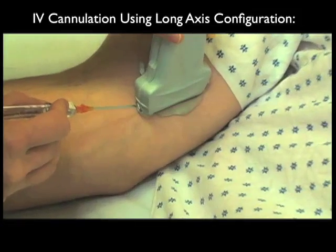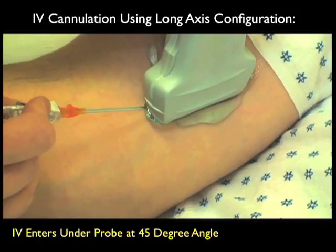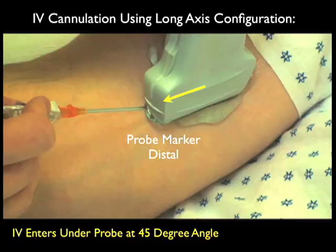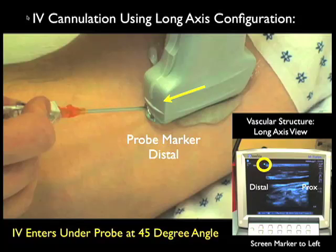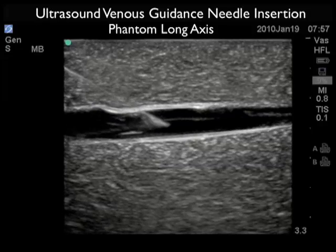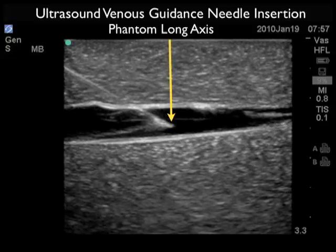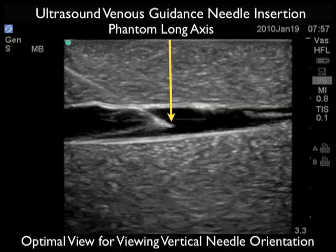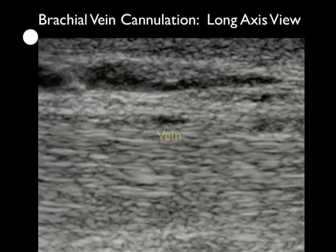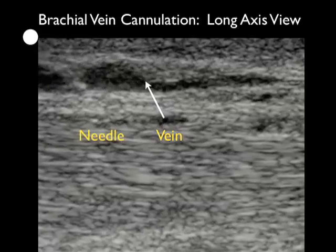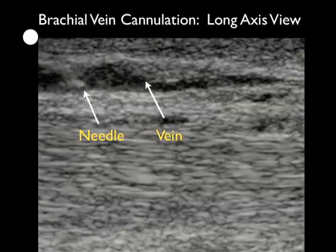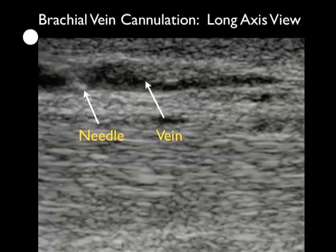We can also use the long axis configuration for cannulation of a deep arm IV. Optimally, you want to place the probe in the configuration of the vessel as it runs up and down the patient's arm. By tradition, we want the probe marker oriented distal so that the distal aspect lines up to the left of the ultrasound screen. Distal on screen will be to the left and proximal to the right. The IV then enters underneath the probe at a 45-degree angle. While the short axis gives information about side-to-side orientation, the long axis gives information about vertical needle depth. Here we see a needle coming from the left and permeating into the vein lumen, allowing accurate determination of the optimal depth of the needle in relation to the venous lumen.